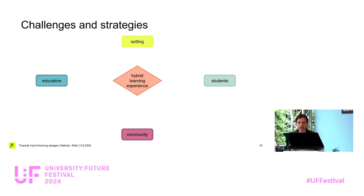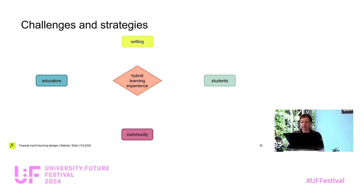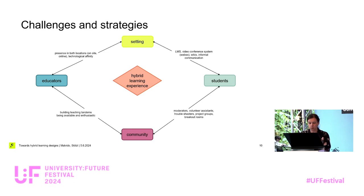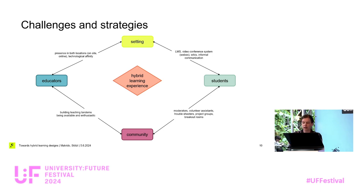This is why we added a second dimension, where the hybrid learning experience within a scenario depends on the setting, the enabling of the scenario, and the community building in the scenario. Students and educators are facing challenges in order to play along within the setting. For example, challenges regarding the setting for the educator mean factors like being present in both locations or acquiring the technological skills to make the setting work. For students, it can mean having access to the learning management system or accessibility in general to spaces and equipment.